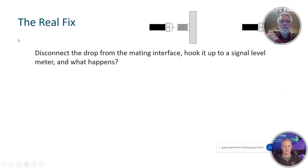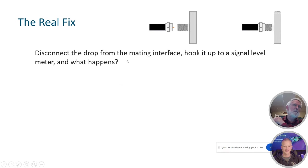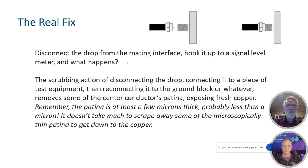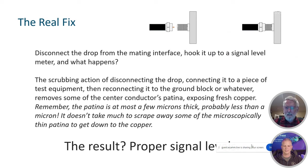Here's what's really going on. You disconnect the drop from the mating interface, you hook it up to a signal level meter, make your signal level measurement, disconnect the drop from the meter, plug it back into the mating interface — and what the heck happens? Well, the scrubbing or scraping action of disconnecting the drop, hooking it up to your meter, disconnecting it from the meter, reconnecting it to the ground block or whatever — that actually scrapes through some of that center conductor patina and exposes fresh copper. Remember, that patina is microscopically thin — maybe a few microns thick, but in many cases less than a micron. So it doesn't take a lot to scrape away that thin patina to get down to the copper. The result: proper signal levels, because we've just removed that attenuator from the center conductor.